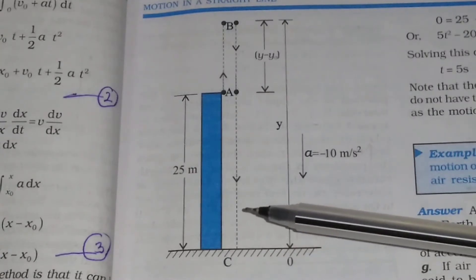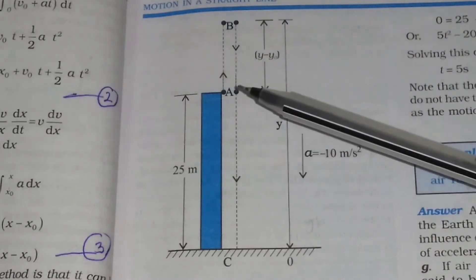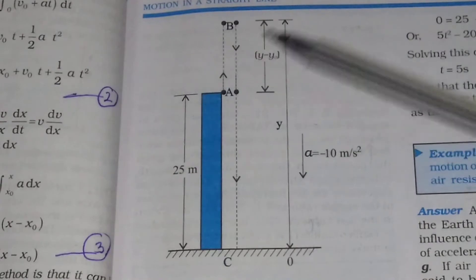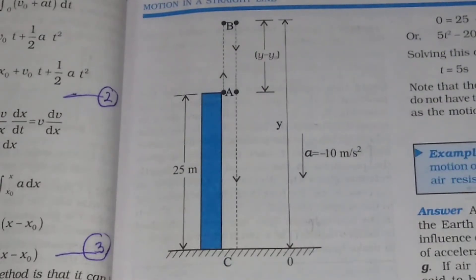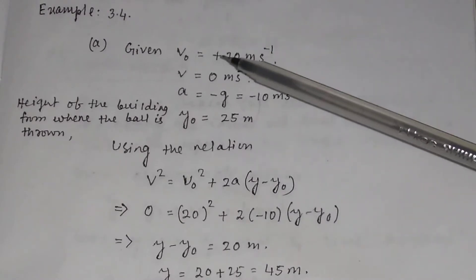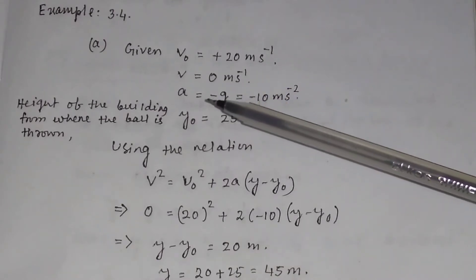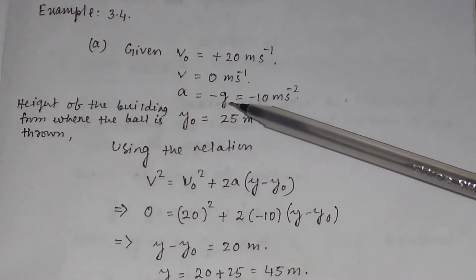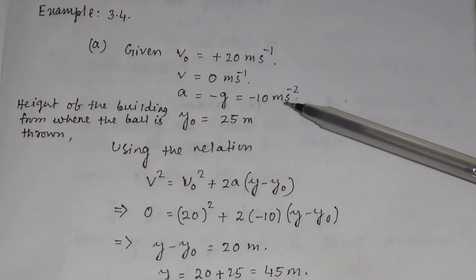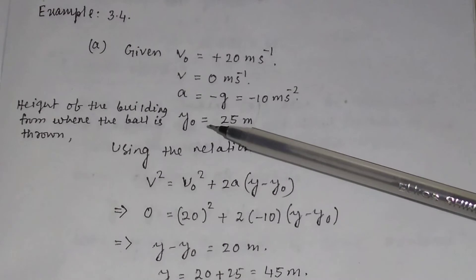In the first question, you have to find out how high will the ball rise — that means you have to find out the distance A-B. Here, the initial velocity of the ball is given as 20 meters per second. The final velocity equals 0 meters per second. The acceleration due to gravity is negative, that is minus 10 meters per second squared.